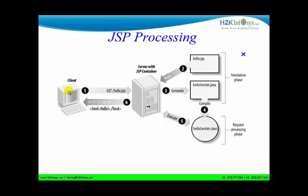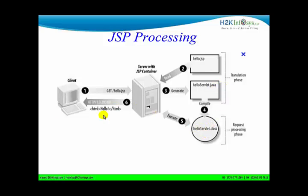Coming back to this diagram - the moment you send a request, when you say hello.jsp, what happens the very first time? The JSP gets converted to a Java file - hello.jsp gets converted to hello_servlet.java. Then the Java file gets compiled to a dot-class file. The hello_servlet.class file then gives a response back to the client. So for the first time when you access a JSP: JSP converts to Java file, then to class file, then processing happens and you get a response.